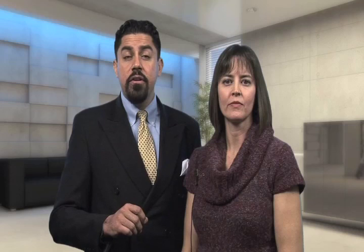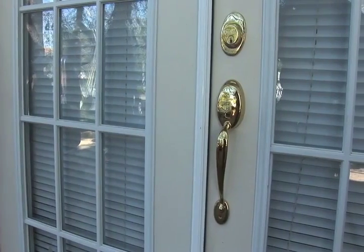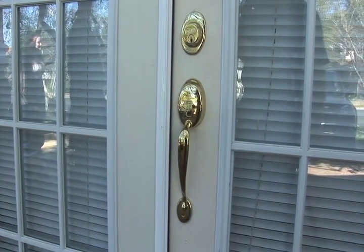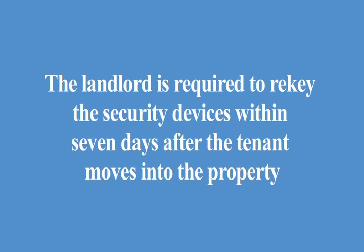Paragraph 19, Security Devices and Exterior Locks. This paragraph indicates that the property must be equipped with certain security devices required by law. These requirements can be found in Subchapter D, Chapter 92 of the Texas Property Code. There are various remedies for the tenant if the landlord fails to comply with the Texas Property Code, and there are substantial penalties for the landlord if these security devices are not installed. The landlord is required to re-key the security devices within seven days after the tenant moves into the property. Any requests to re-key, change, install, repair, or replace a security device must be in writing. Requests for additional security devices or additional re-keying will be paid by the tenant in advance and may be installed only by contractors authorized by the landlord.